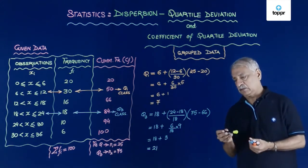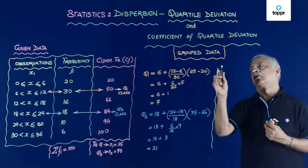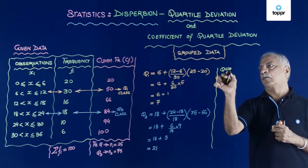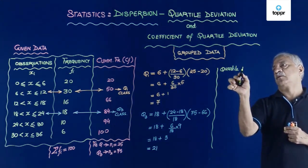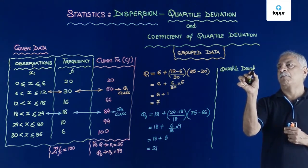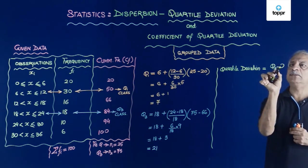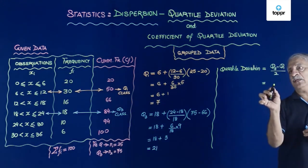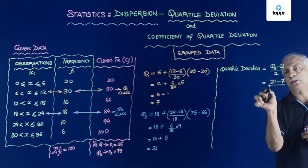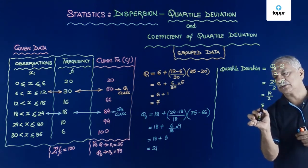Quartile deviation, this is equal to Q3 minus Q1 upon 2. So Q3 is 21 minus 7 upon 2, which is 14 upon 2, which is 7. So the quartile deviation is 7.